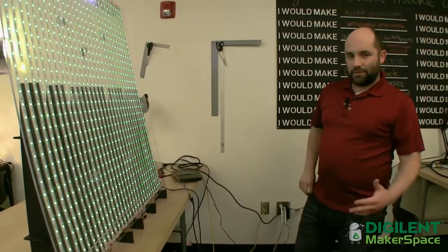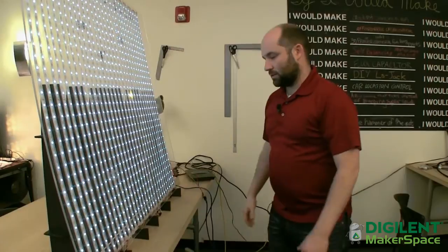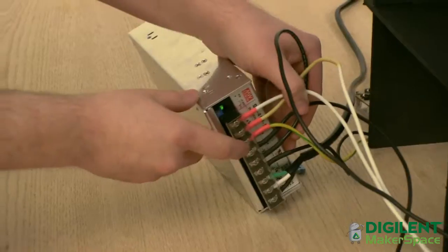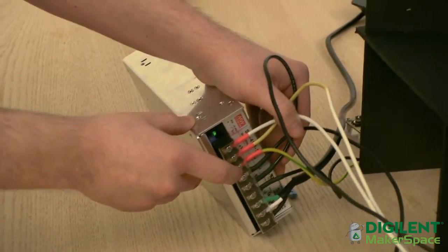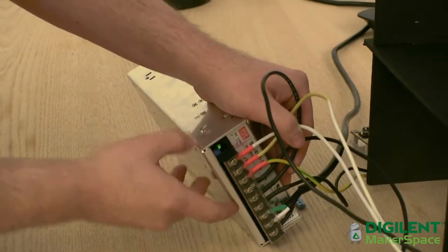Each panel requires about 14 amps. We have three panels so that needed about 45 amps. These LED strips require 5 volts. So we got a 5 volt 75 amp power supply.